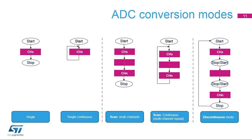The AD converters support several conversion modes. Single mode converts only one channel in single-shot or continuous mode. Scan mode converts a complete set of predefined program input channels in single-shot or continuous mode. Discontinuous mode converts only a single channel at each trigger signal from the list of predefined program input channels.